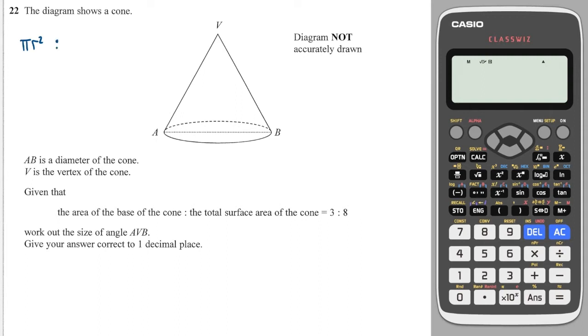And that ratio is to the total surface area. So the total surface area is going to be the base, which is πr², plus the curved surface area, which you are told in your formula sheet, and that is πr times l. l is the slanted height of the cone. And we are told that that is 3 to 8.